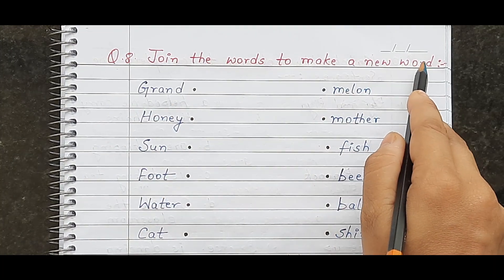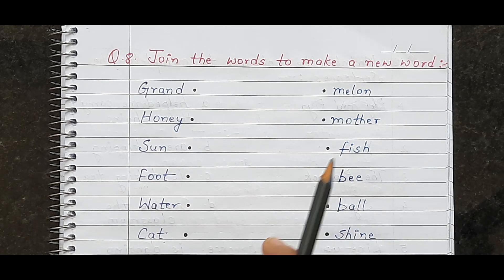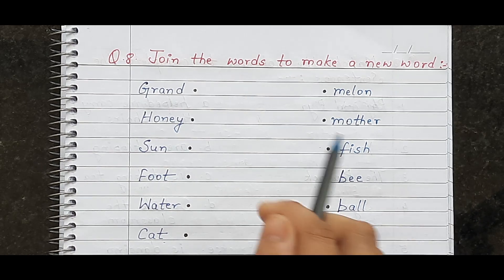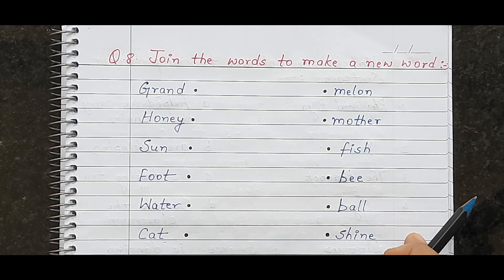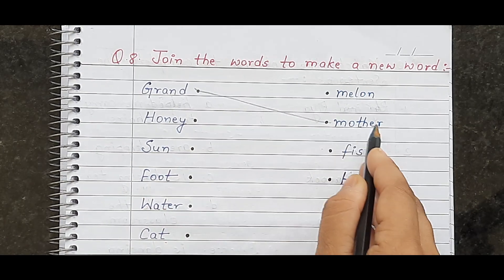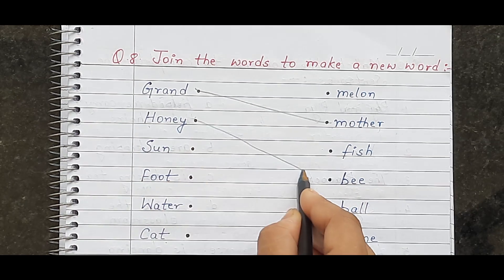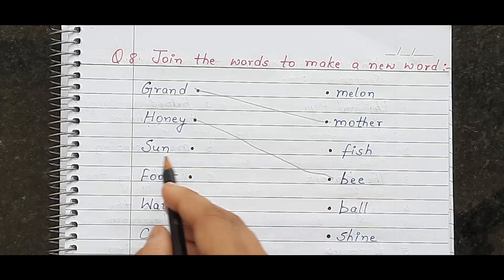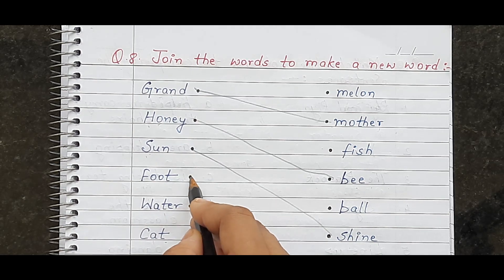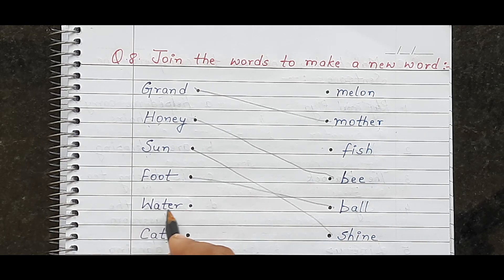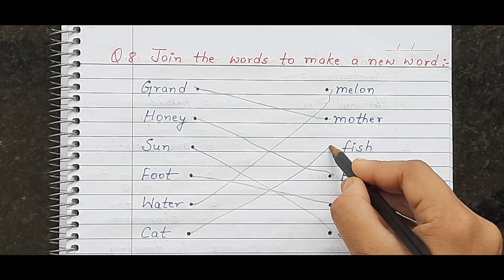Here is the next question: join the words to make a new word. Children have words on one side and matching words on the other side. They join two words to form a compound word. For example, 'grand' joined with 'mother' makes 'grandmother.' 'Sun' joined with 'shine' makes 'sunshine.' 'Foot' joined with 'ball' makes 'football.' 'Water' joined with 'melon' makes 'watermelon.' 'Cat' joined with 'fish' makes 'catfish.'